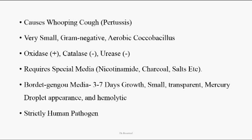These organisms require special growth factors in the medium, such as nicotinamide, charcoal, salts, and amino acids. The special medium to grow this organism is Bordet-Gengou media, also called Regan-Lowe media — these two terms are used interchangeably. On these media, the organisms take three to seven days for growth. The colonies are very small and transparent, appearing as mercury droplets, with hemolysis visible on the medium. These organisms are strictly human pathogens.